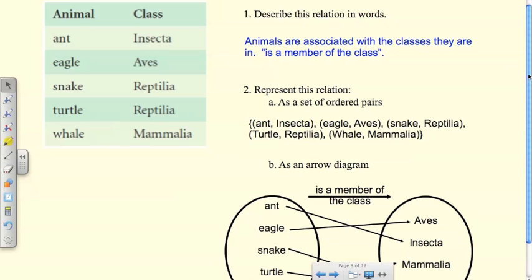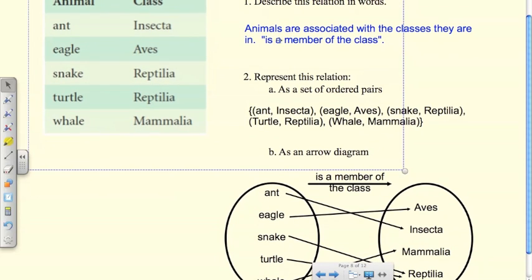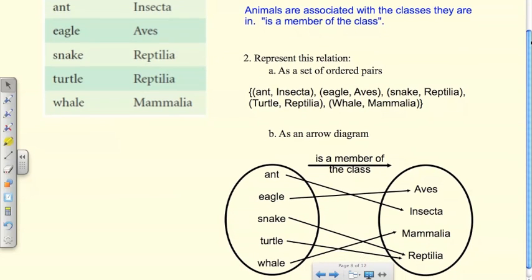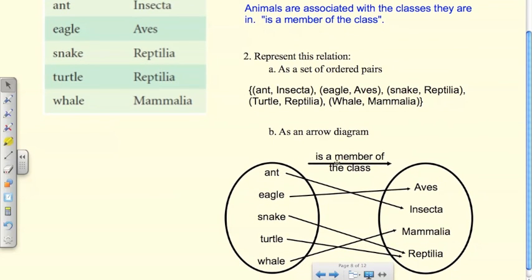They want us to represent this in different ways other than the table. So describe this relation in words: animals are associated with the class they are in. An association would be 'is a member of the class.' Represent this as a set of ordered pairs, there it is, and as an arrow diagram here.